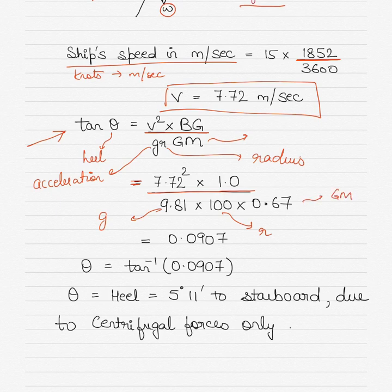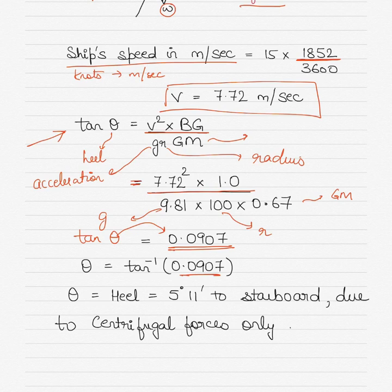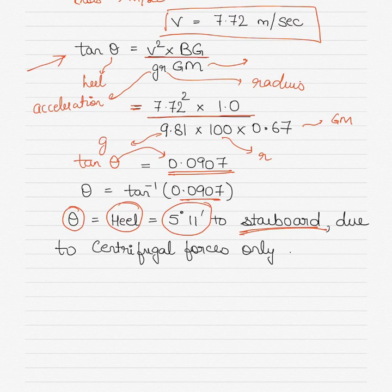Substituting the values: tan θ = (7.72)² × 1 / (9.81 × 100 × 0.67), which gives tan θ = 0.0907. Taking the inverse tangent, θ = tan⁻¹(0.0907), which equals 5 degrees 11 minutes. This heel will be to starboard, because as explained, when the vessel turns to port the heel is always on the opposite side due to centrifugal forces.